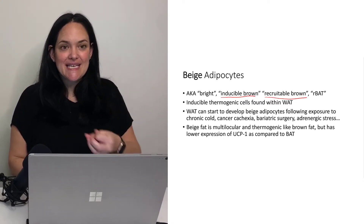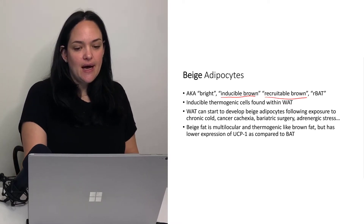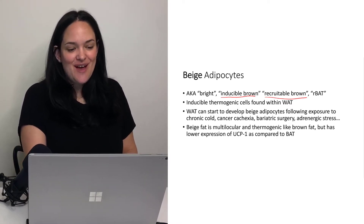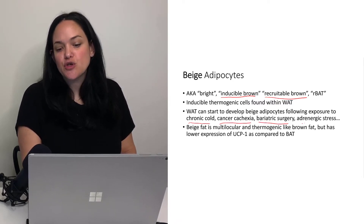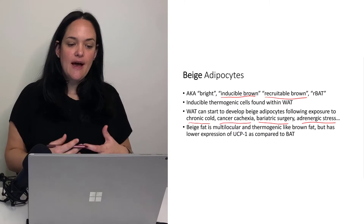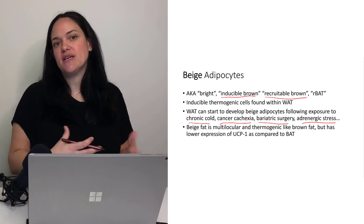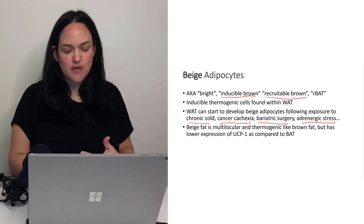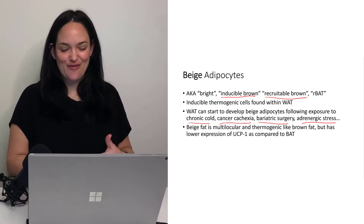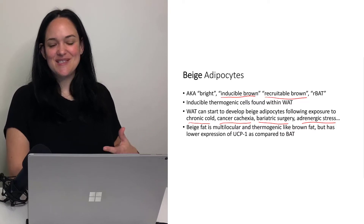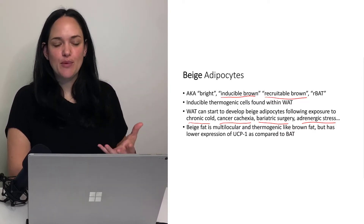What kinds of things can promote the browning of white adipocytes? Basically stress: chronic cold, wasting due to cancer, bariatric surgery, adrenergic stress, and having burns on the body — which we're going to see in a future example. These can all promote the browning of our fat. But if you look at this list, these are not necessarily desirable things that we would like to put people through.